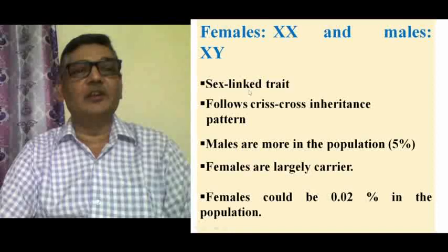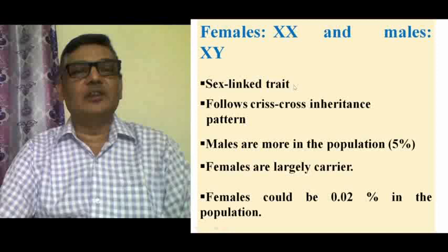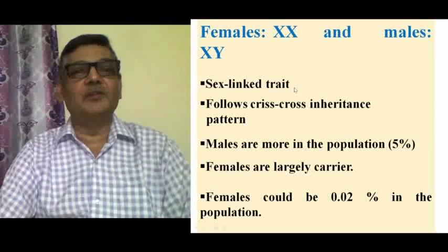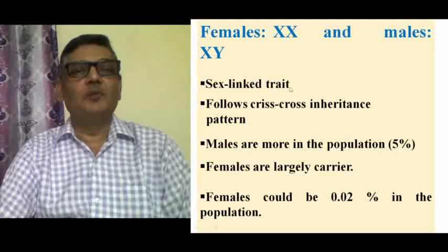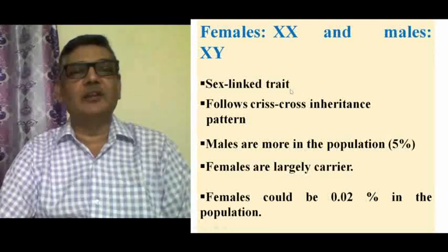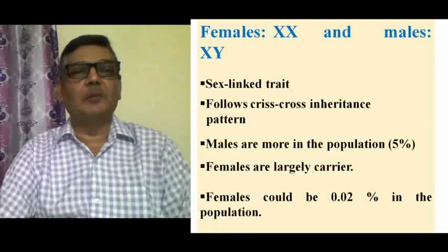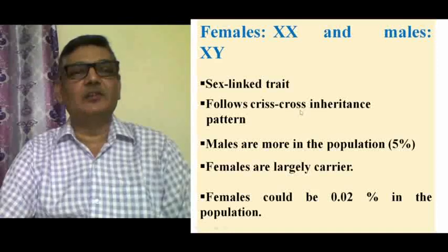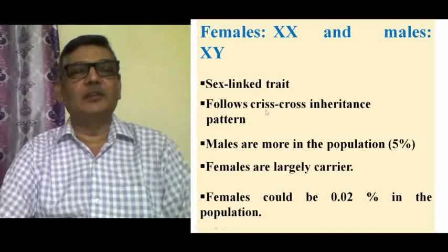Red-green color blindness is a sex-linked trait in which a person will not be able to distinguish either red or green color properly. This trait follows a crisscross inheritance pattern, meaning the color blind feature gets inherited from father to his daughter, and then it is the daughter who inherits that trait to her sons.